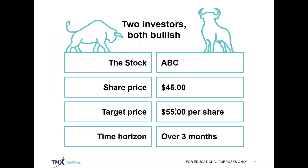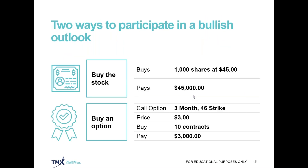Let's take a look at two bullish investors on stock ABC, with the share price at $45 and both investors having a target price of $55 per share over the next three months. One way to participate is to buy the stock. The one bullish investor can buy 1,000 shares and pay $45 per share, putting out $45,000. Remember, if you're doing this within your registered accounts, there's no way to leverage that — you need to put up 100% of that cash to buy those 1,000 shares.